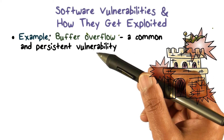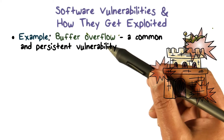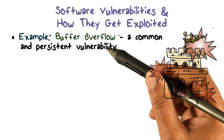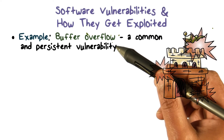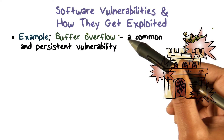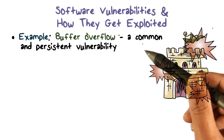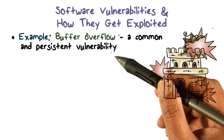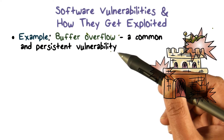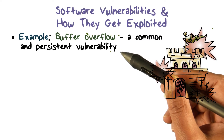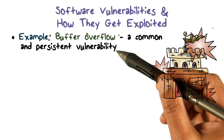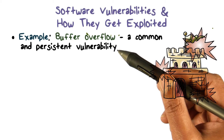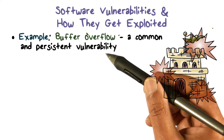The vulnerabilities we're going to talk about come because of memory overflow. Memory overflow means that the amount of memory we have for a certain data type is not sufficient, so the data type runs over its allocated space.